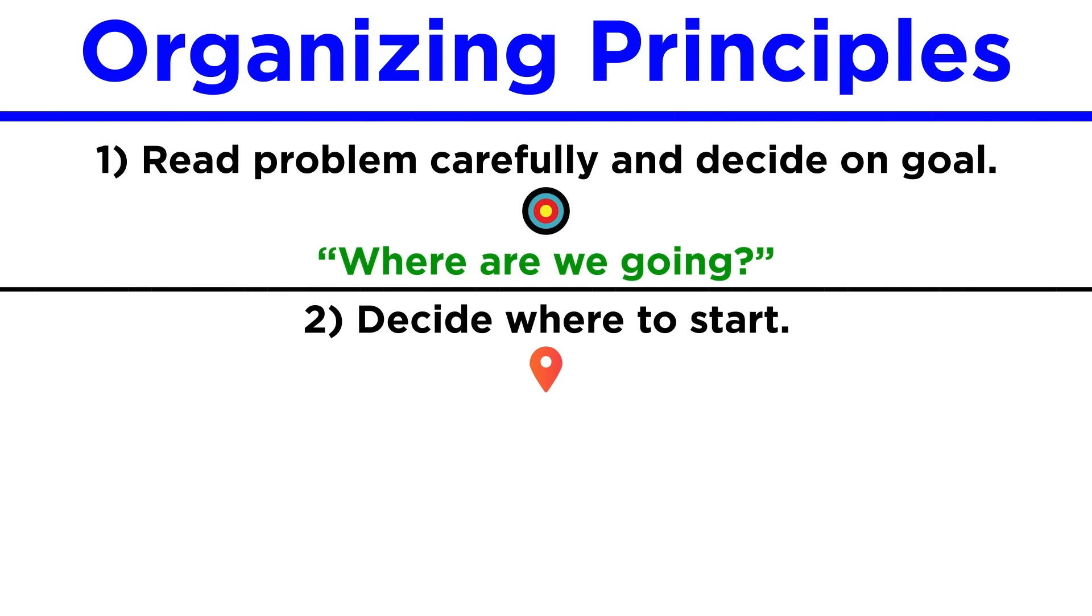Number two, to get to the goal, solving the problem, we have to decide where to start. We may start by determining the reactants and products of a reaction, or some other way of categorizing data. The point is to see what we have as a starting point, so that we can answer, how do we get there?